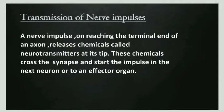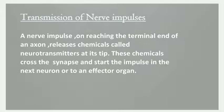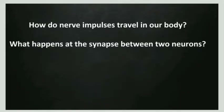Transmission of nerve impulses: a nerve impulse, on reaching the terminal end of an axon, releases chemicals called neurotransmitters at its tip. These chemicals cross the synapse and start the impulse in the next neuron or to an effector organ. How do nerve impulses travel in our body, or what happens at the synapse between two neurons?